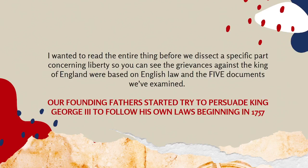Here are a few of the grievances in the Declaration of Independence. It says, 'He' — referring to the King — 'has refused his assent to laws. He has forbidden his governors to pass laws of immediate and pressing importance. He has called together legislative bodies at places unusual, uncomfortable, and distant from the depository of their public records for the sole purpose of fatiguing them into compliance with his measures. He has dissolved representative houses repeatedly for opposing with manly firmness his invasion on the rights of the people. He has made judges dependent on his will alone for the tenure of their offices and the payment of their salaries.'